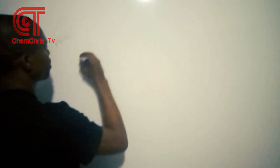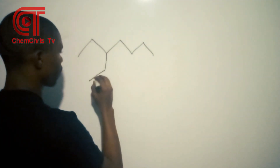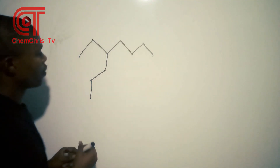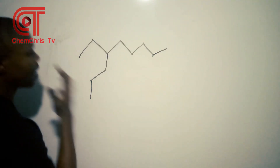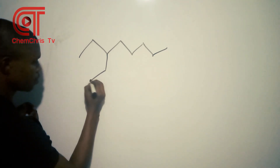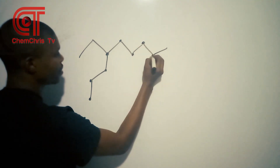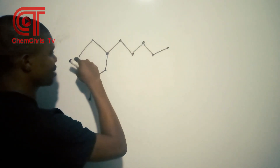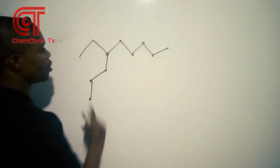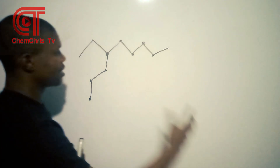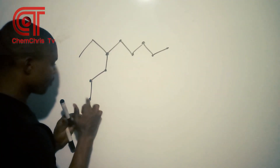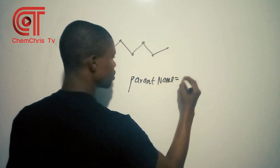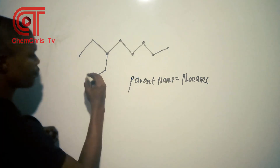Let's do one more example. Looking at this structure: counting from here — 1, 2, 3, 4, 5, 6, 7, 8, 9. From here to here is 9 carbons. Comparing other paths: 8 carbons, and 6 carbons. So the longest chain is 9, meaning the parent name is nonane.